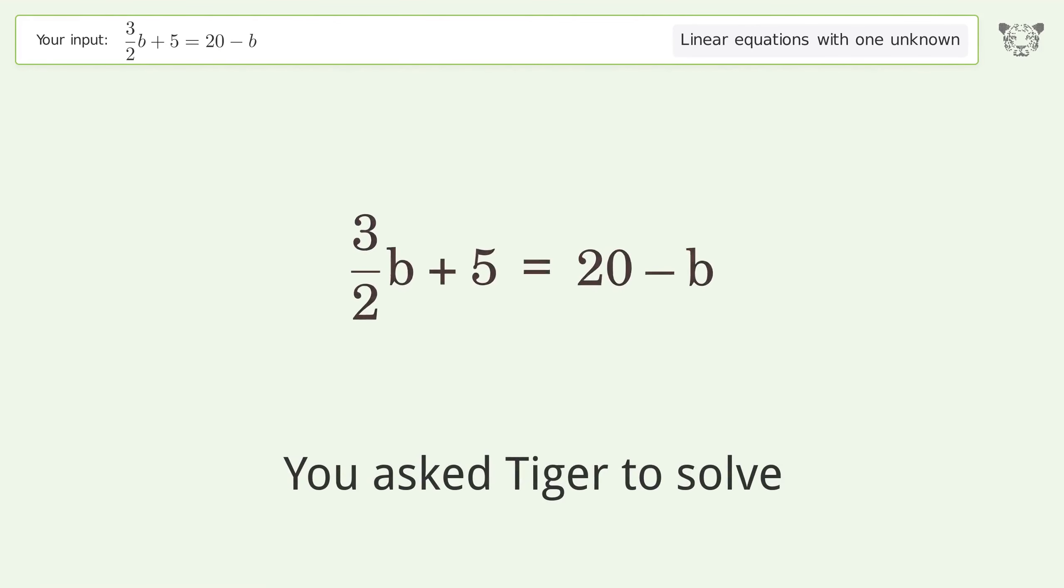You asked Tiger to solve. This deals with linear equations with one unknown. The final result is b equals 6.